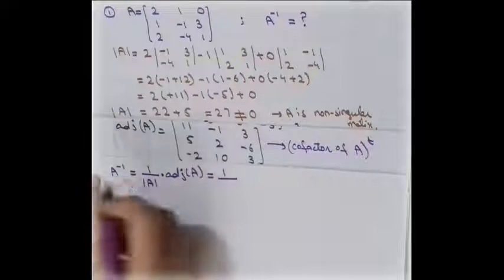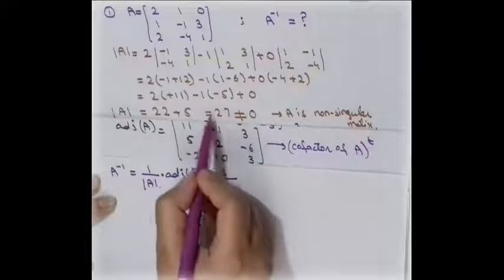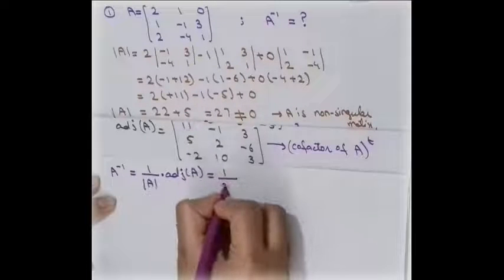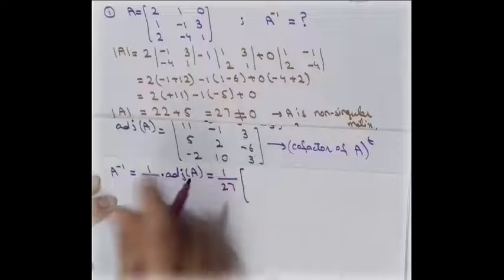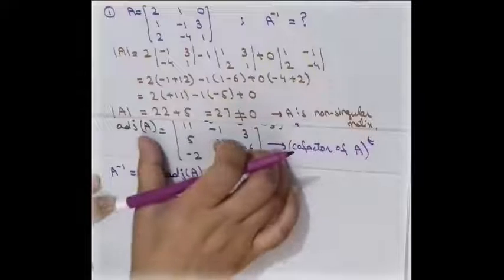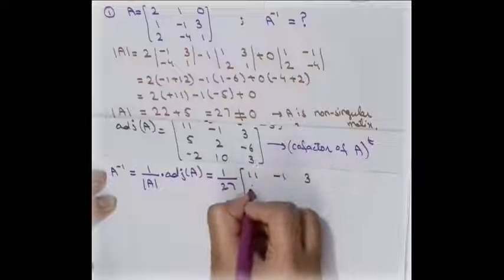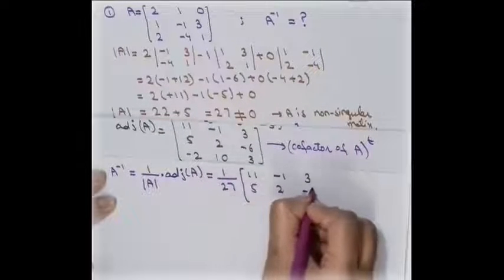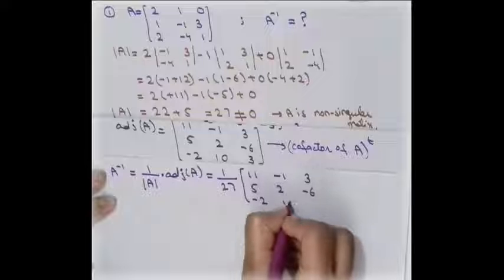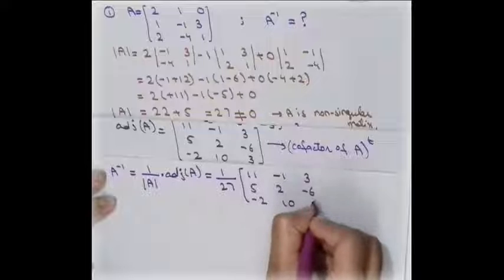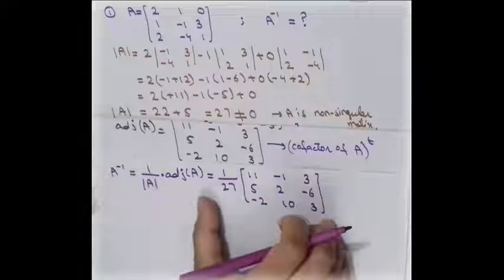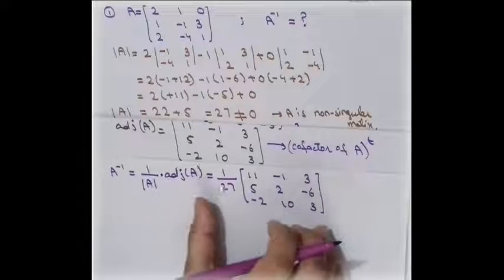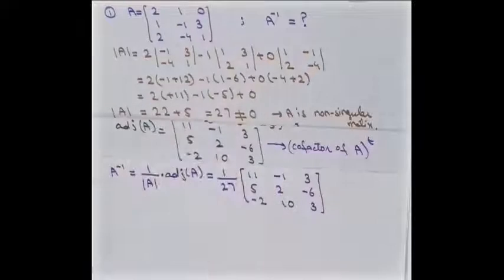After transposition, the adjoint matrix is: [11, -1, 3; 5, 2, -6; -2, 10, -3]. The determinant is 27, so the inverse A⁻¹ = (1/27) × adjoint, giving the final matrix: (1/27) × [11, -1, 3; 5, 2, -6; -2, 10, -3].